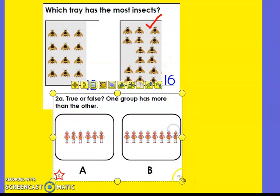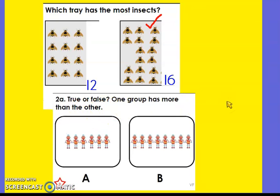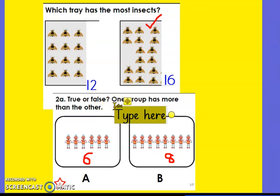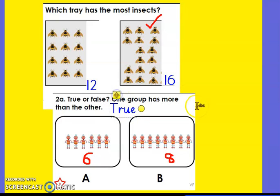So let's have a look at this next question. True or false: one group has more than the other. When it's asking you true or false, it's asking you whether you think this is correct or not. It looks like it — if I was just guessing, I'd say it looks like B is more, but let's check. So that's true. You can write true, or in your book you can just put a circle around the word true.